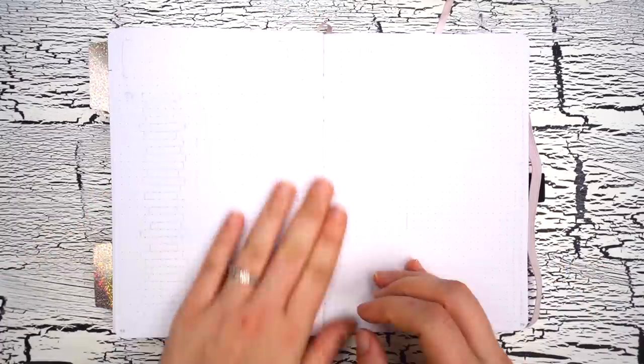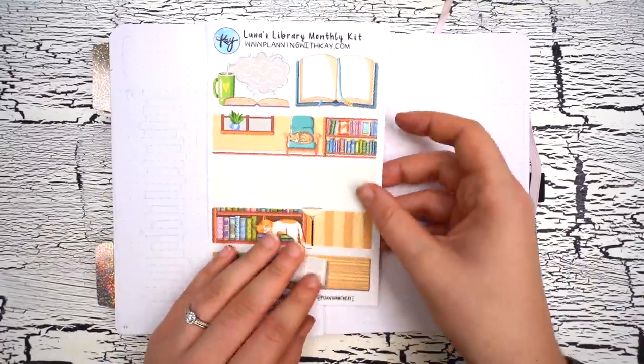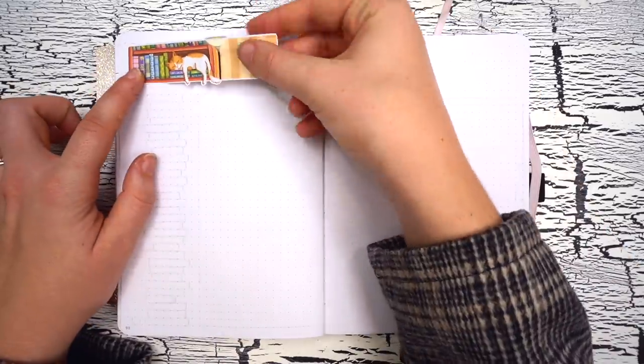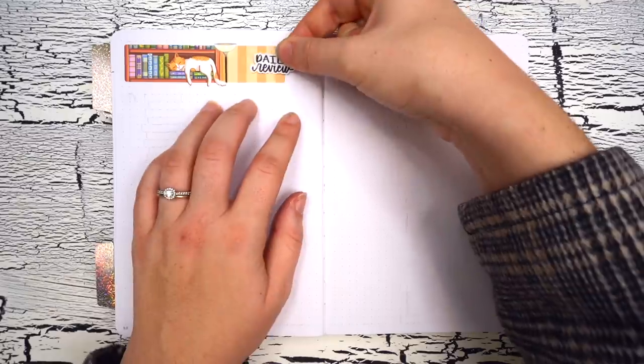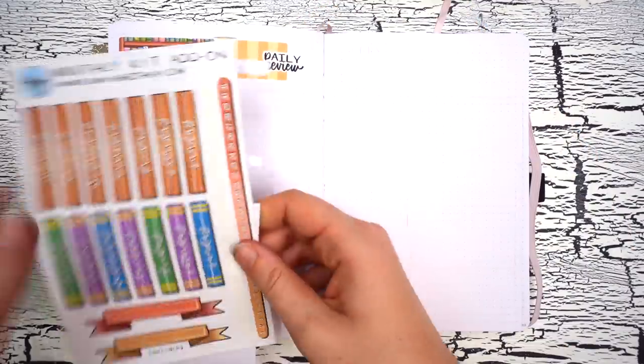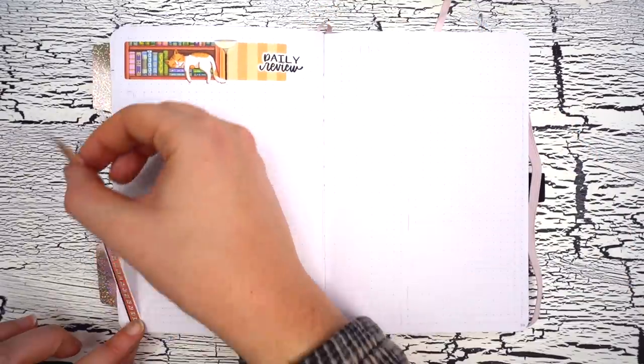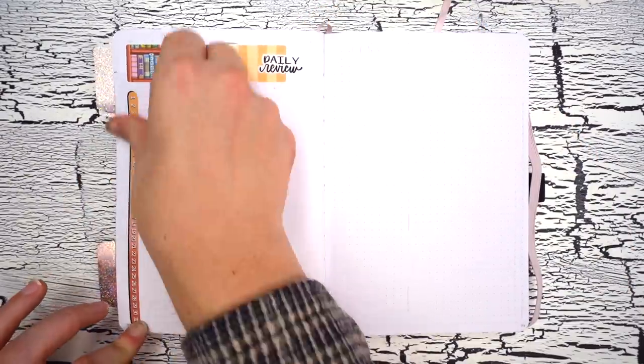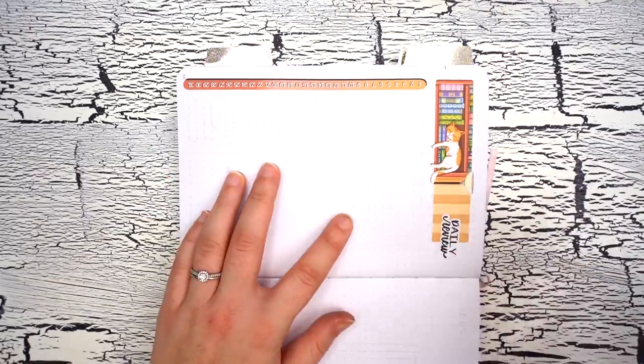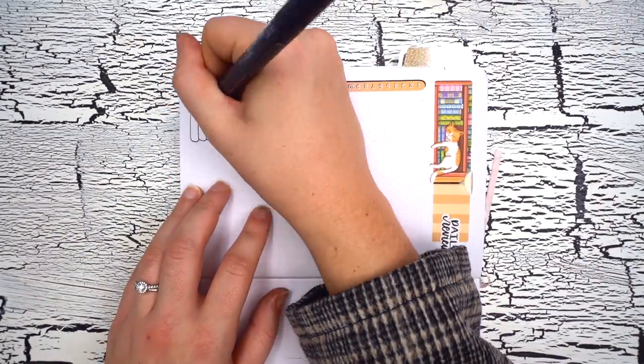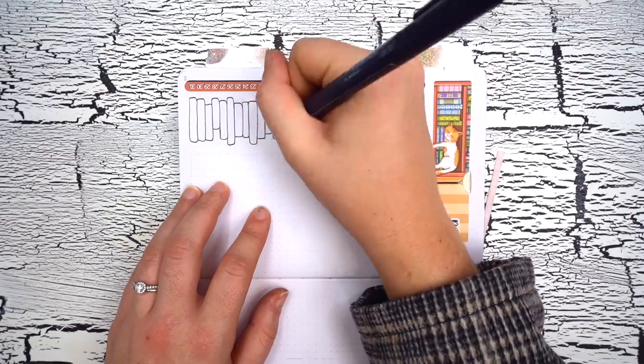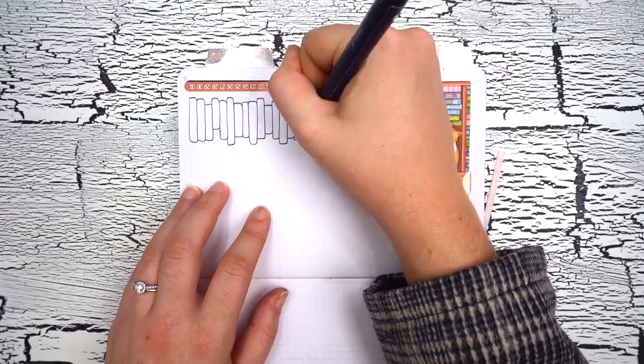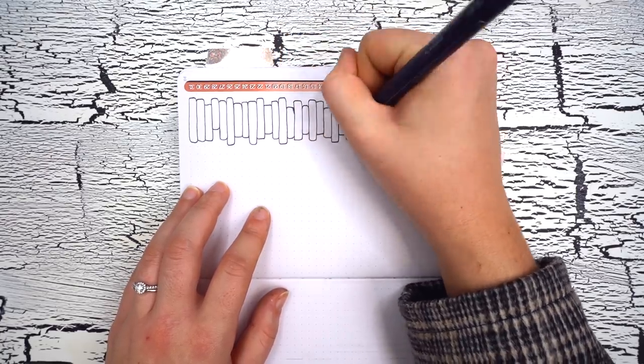The next functional spread in my December setup is going to be my daily review. This month my daily review is going to include three different things. Firstly, I'm going to get one line for each day of the month as a spot to jot down a brief summary of what happened that day. This is something I've been doing for years in my bullet journals and I really love being able to look back on these daily review spreads to get an idea of how I was spending my time that month. Secondly, I'm going to include a color-coded mood tracker.